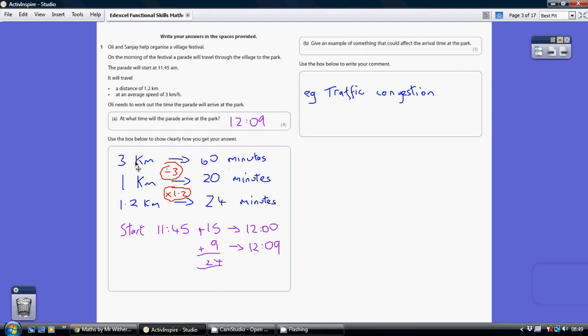So let's just break this down. So if it takes us 60 minutes to do 3 km, if we divide by 3, we can see that it would take us 20 minutes to travel 1 km.